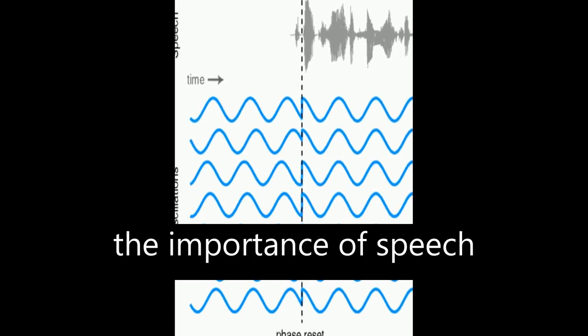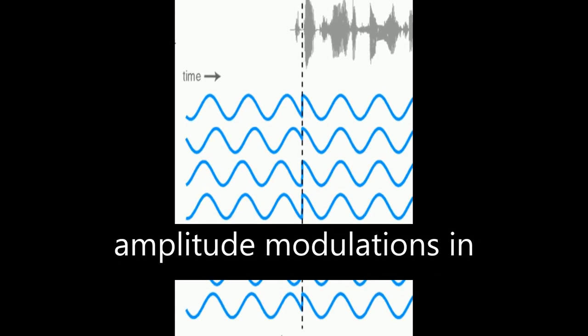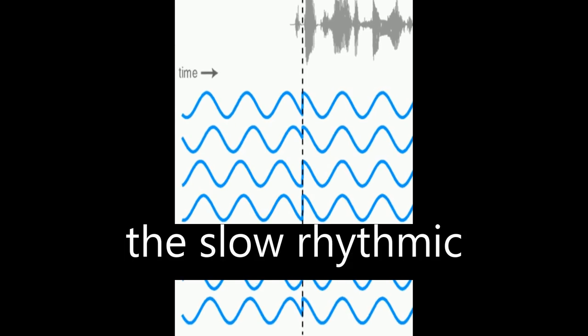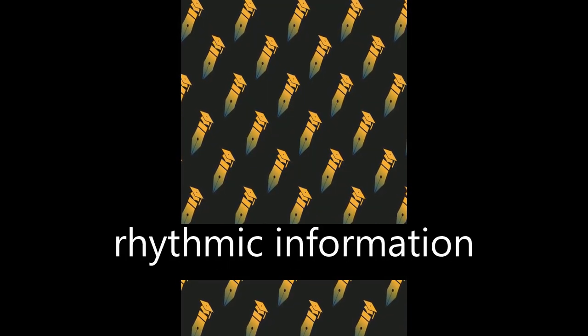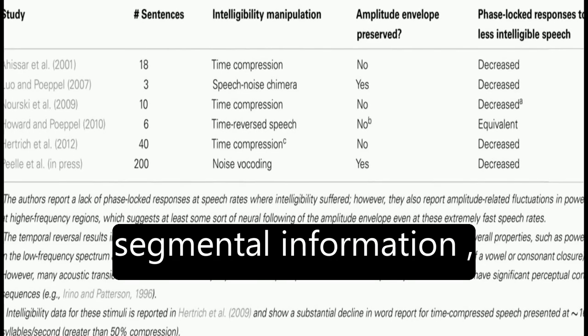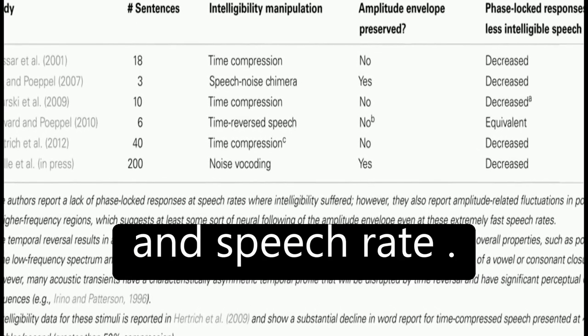The article discusses the importance of speech rhythm and how it is conveyed through amplitude modulations in the slow rhythmic information contained in speech. It highlights that rhythmic information contains important markers for place and manner of articulation, segmental information, and speech rate.